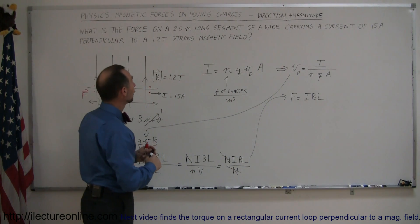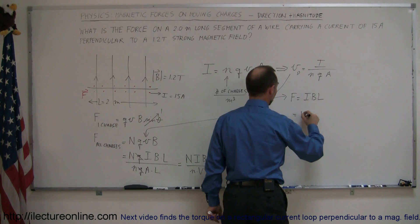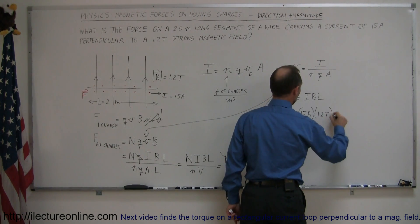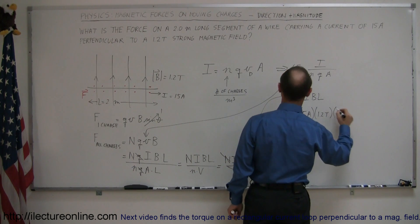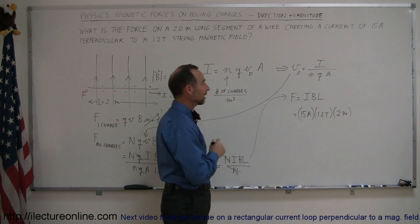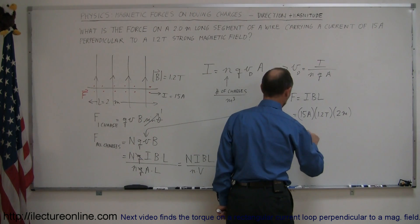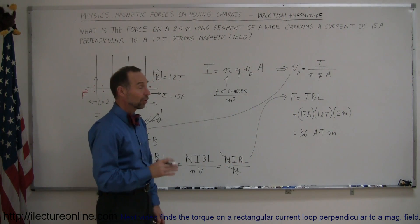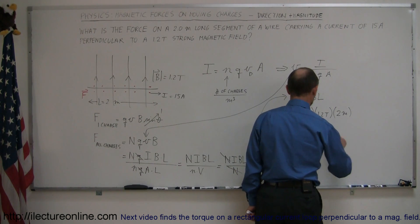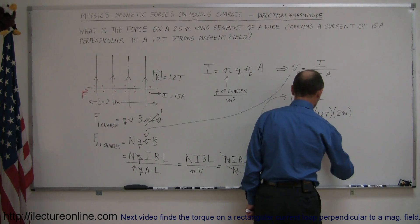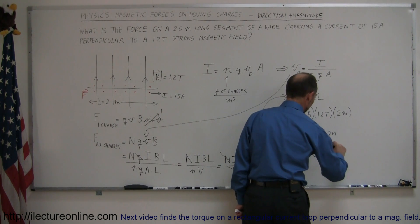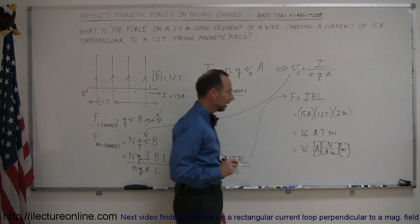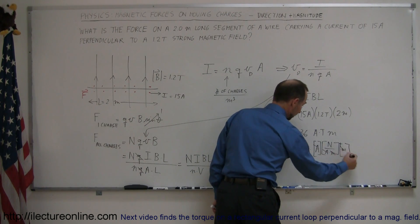All we have to do is plug in the numbers. For the current we had 15 amps, for the B field we had 1.2 Teslas, and for the length we had 2 meters. That gives us 15 times 2 equals 30, times 1.2 equals 36 — in units of amps times Teslas times meters. Remember the definition of Tesla is Newtons per amp·meter, so amps and meters cancel out, and we're left with 36 Newtons.